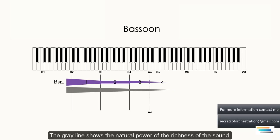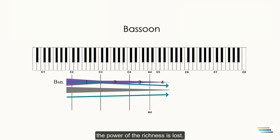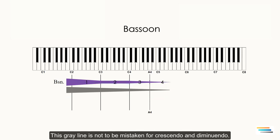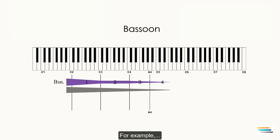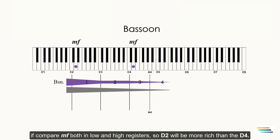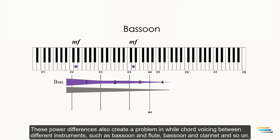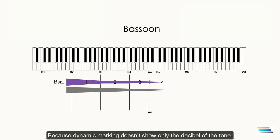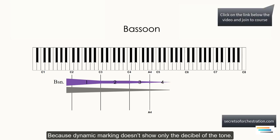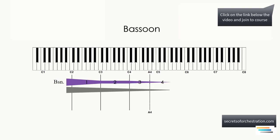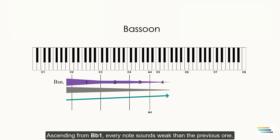The gray line shows the natural power of the regions of the sound. As the bassoon moves towards the end of the range, the power of the regions is less. Be careful. This gray line is not to be mistaken for crescendo and diminuendo. This is a native character of the bassoon, regardless of the player and the dynamic marking. For example, if compare mezzo forte, both in low and high registers, so D2 will be more rich than the D4. This power difference also creates a problem while chord voicing between different instruments, such as bassoon and flute, bassoon and clarinet, and so on. Because dynamic marking doesn't show only the decibel of the tone - markings indicate both volume and expression. Ascending from B♭1 every note sounds weaker than the previous one.